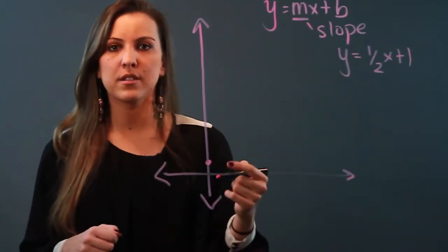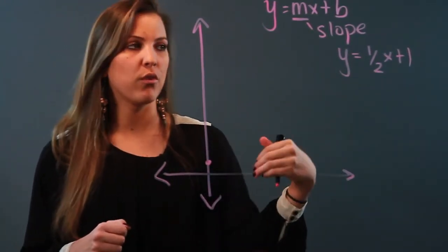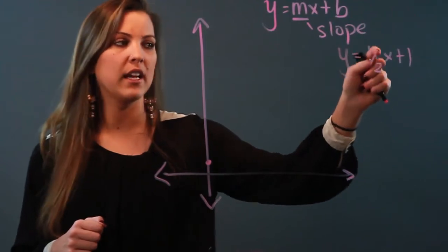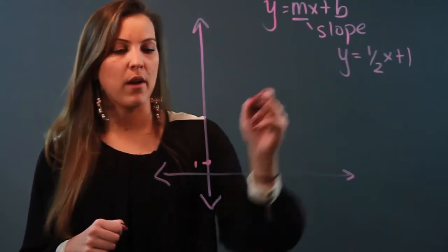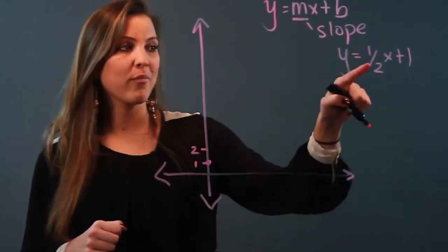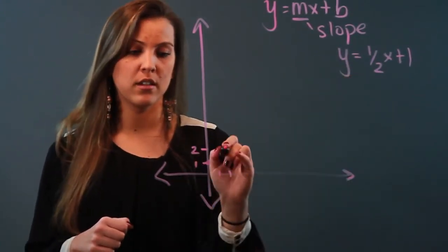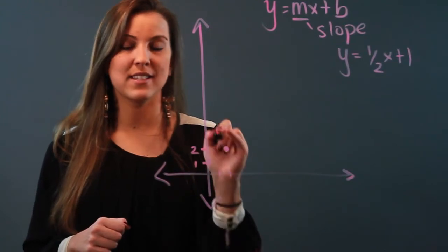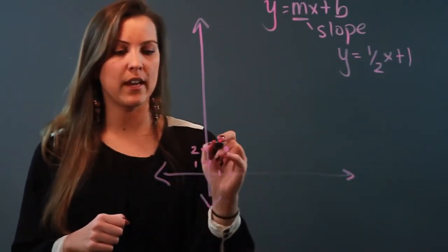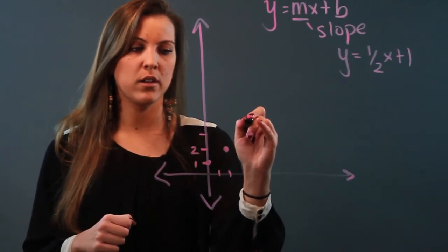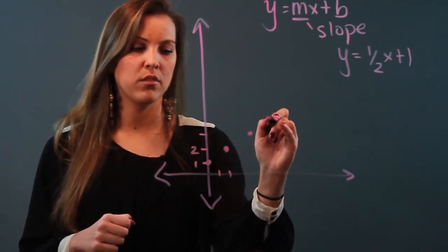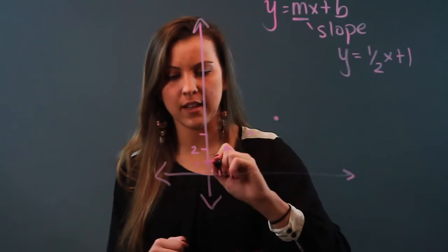is one-half. Slope means your rise over your run, so I'm rising one unit and running two units. From my y-intercept of one, I'm going to rise one unit to two and run over two units to two. That's the second point on my line. I can keep doing that—rising one, running two—and my line will look something like that.